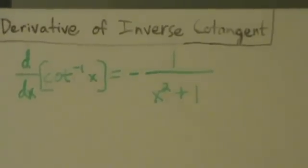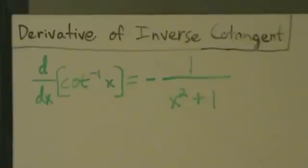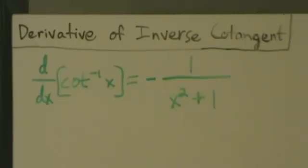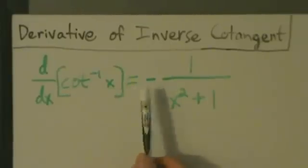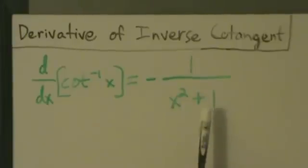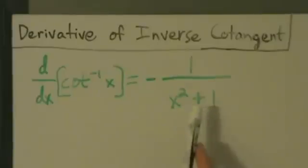In this video we're going to talk about the derivative of the inverse cotangent function. We talked about the derivative of the inverse tangent, and we're actually going to use that to prove this — the same way we did the derivative of the inverse cosine. The derivative of inverse cotangent of x equals negative 1 over x squared plus 1. Notice this is just the negative of the derivative of inverse tangent.